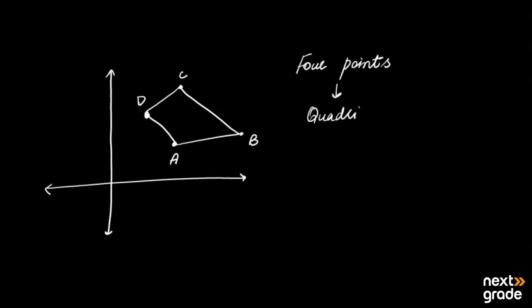When you consider four points in the Cartesian plane and join them, the shape formed will be a quadrilateral. However, a quadrilateral is formed only when those four points are non-collinear. If any of the points satisfy a collinear condition, then the shape will not be a quadrilateral.